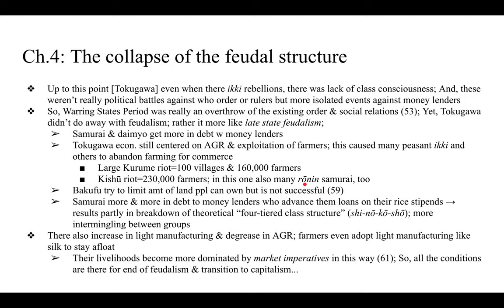The bakufu tried to limit land ownership but was unsuccessful. The samurai became more and more indebted to money lenders who advanced loans on their rice stipends — samurai were paid in yearly rice stipends in koku based on their rank. The amount was fixed and known, making it easy for money lenders to advance loans, but it resulted in samurai becoming greatly in debt and in the breakdown of the theoretical four-tiered class structure of shi-no-ko-sho: samurai, farmers, artisans, and merchants.